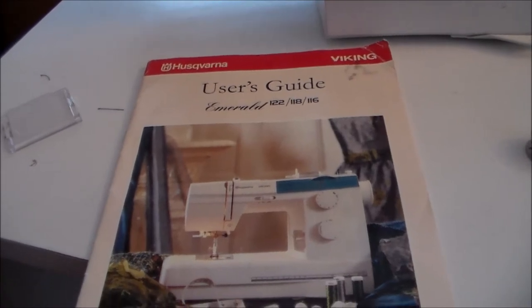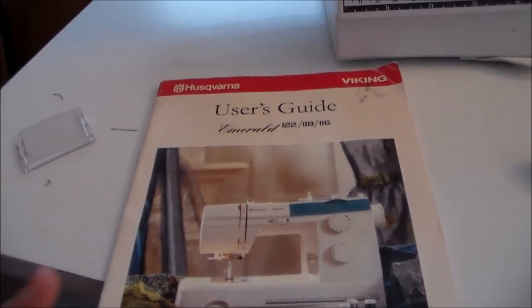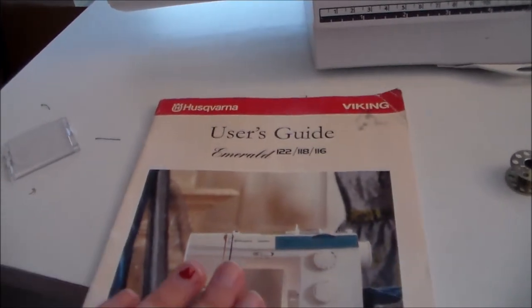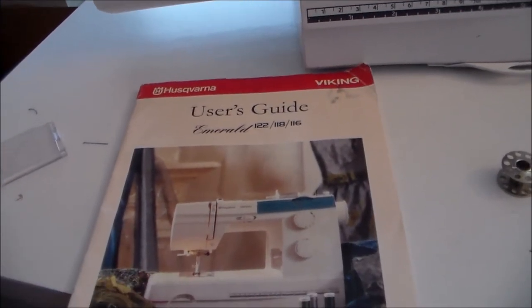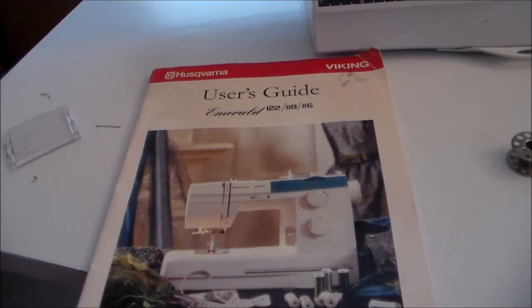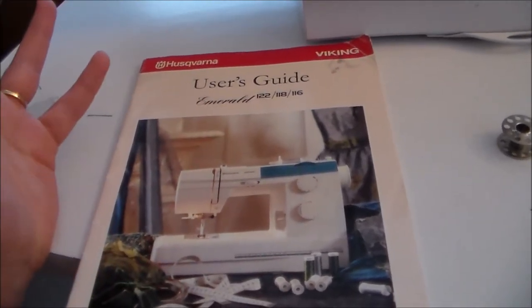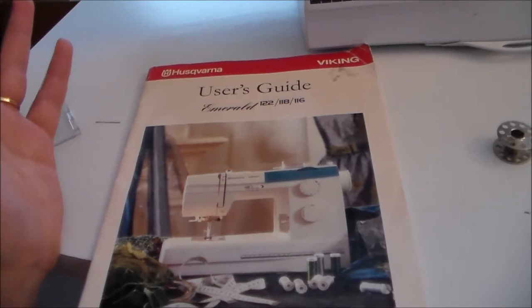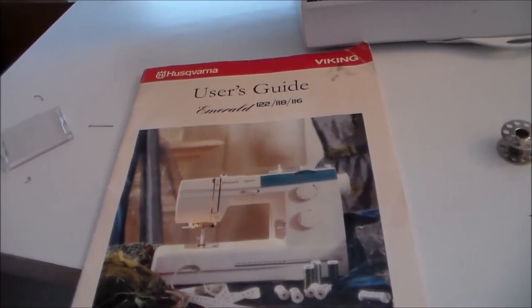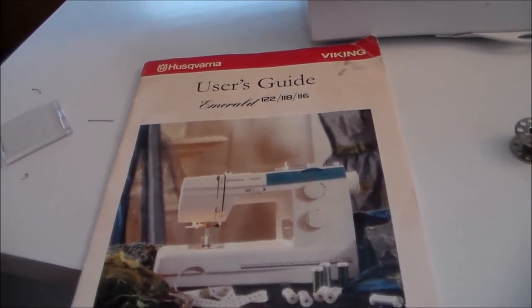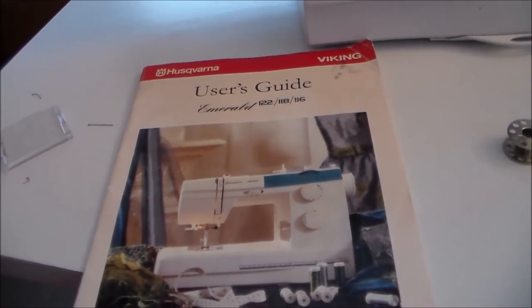If you are unsure what size bobbin you need for your machine, you can start by checking the manual that came with your machine. Sometimes that information's in there, sometimes it is not. I went looking through my manual and I could not find that information anywhere. I also had a difficult time finding it online. It seems like they're operating under the assumption that you're just going to buy the bobbins from the manufacturer, which really isn't feasible for everyone.